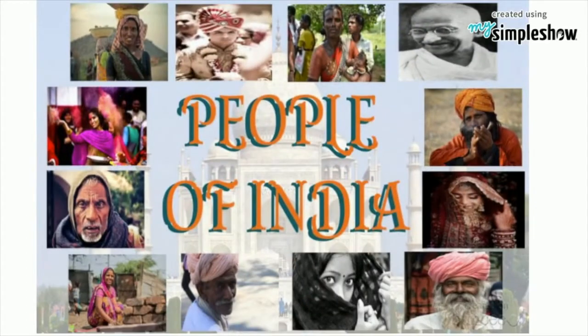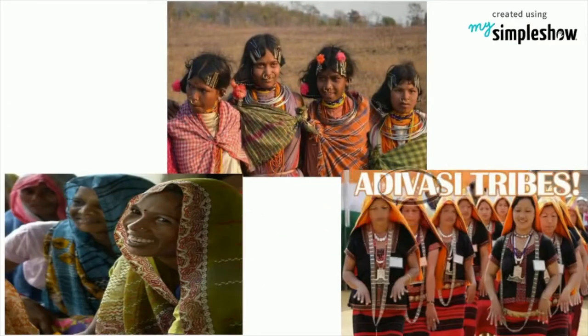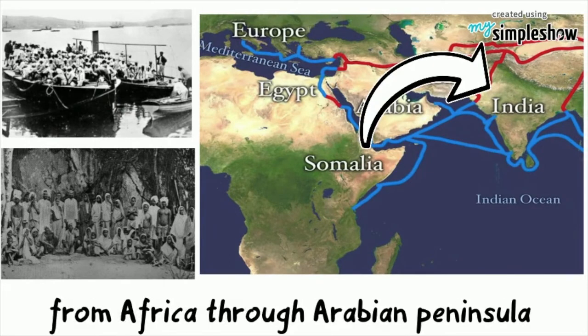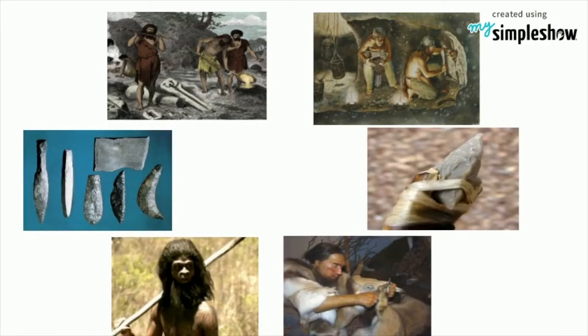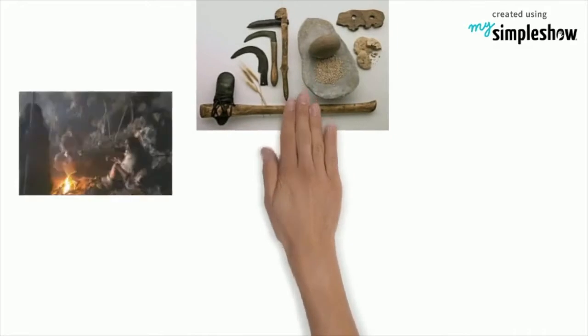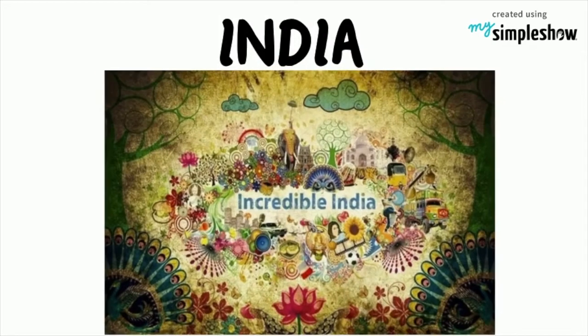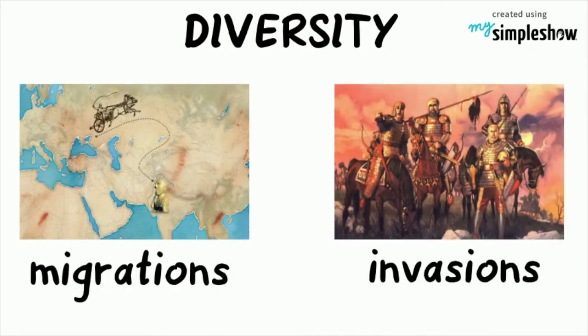The original inhabitants of India were the ancestors of the tribal group Adivasis. The first people who arrived on the Indian subcontinent came from Africa through the Arabian Peninsula, bringing with them middle stone age tools to help hunt prey, gather food, and make clothes. India has tremendous diversity.